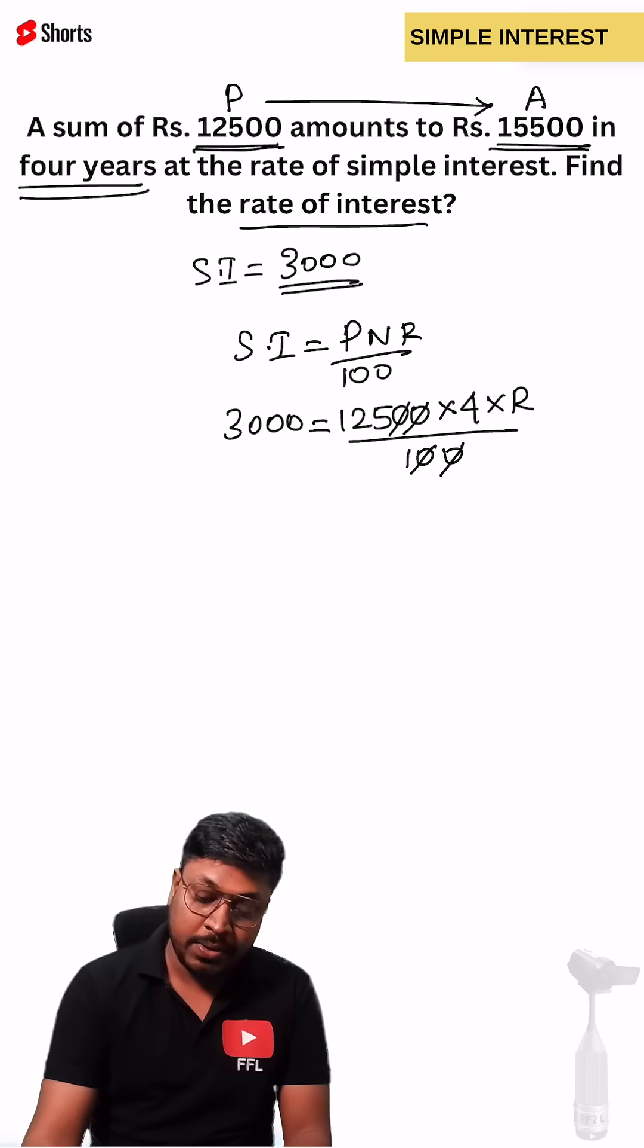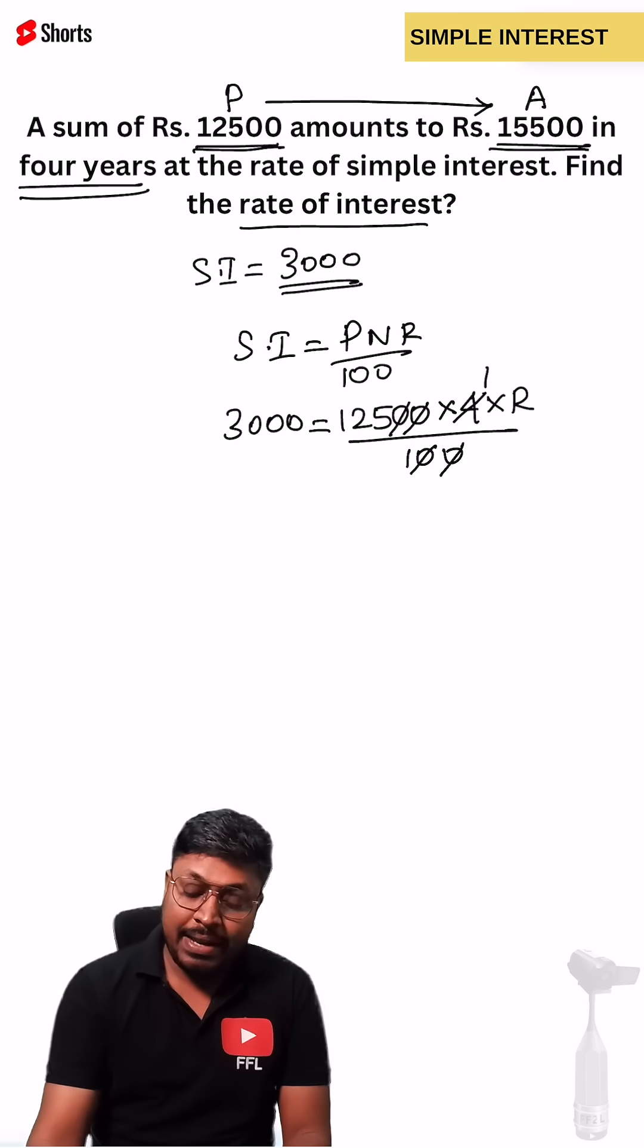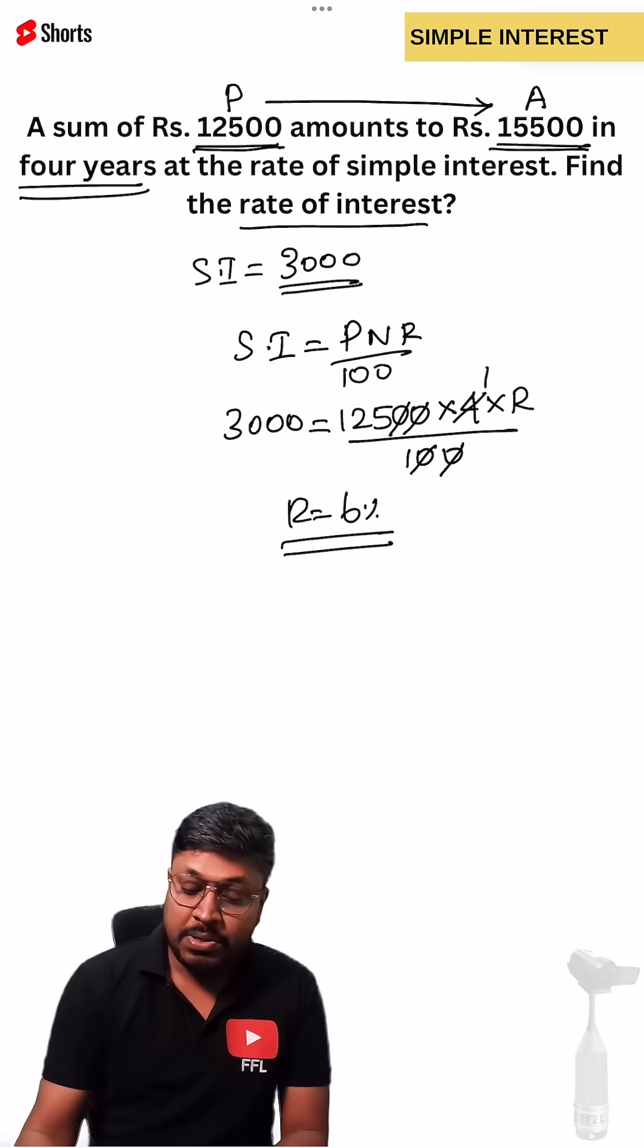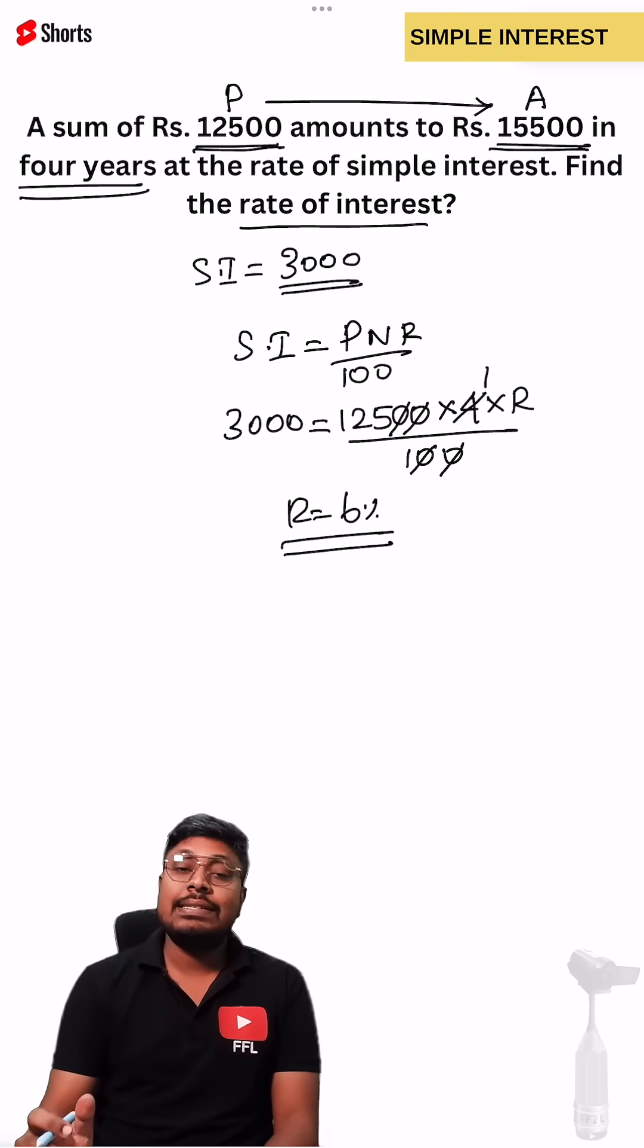We can cancel two zeros, two zeros here. Similarly, we can cancel on the 4s table, or we can cancel it on the 2 table, which becomes 125 times 3. This becomes 6 percentage. So the answer for this question is 6 percentage.